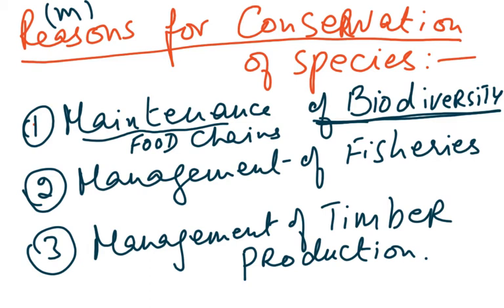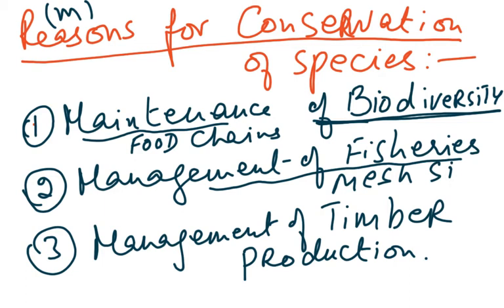The second context is management of fisheries. We are currently overfishing, reducing populations and making many fish species extinct. One method of management is controlling the mesh size of fishing nets so that small fish can escape and breed the following year, allowing populations to be maintained.